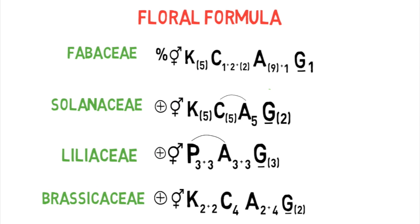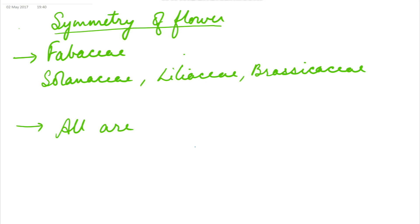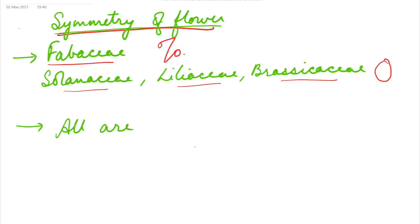These are the four families we are going to study: Fabaceae, Solanaceae, Liliaceae, and Brassicaceae — three of which are described in NCERT while the fourth is given in a figure. Regarding symmetry, Fabaceae is zygomorphic, while Solanaceae, Liliaceae, and Brassicaceae are all actinomorphic. All four families are bisexual.